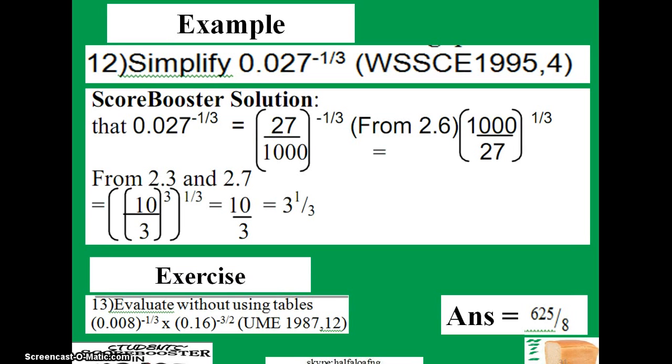So today we're going to look at more examples from those exams. The first one today is simplify 0.027 raised to power minus one-third. This is WASSCE question 1995. The first thing you're going to do is to change these decimals into fraction. So 0.027 is the same as 27 over 1000.